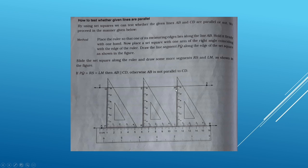If PQ equals RS equals LM — that is, if the measures of the line segments PQ, RS, and LM are all equal — then we can say that AB is parallel to CD. Otherwise AB is not parallel to CD. If the distances between the lines are the same, the lines are parallel; otherwise they are not.